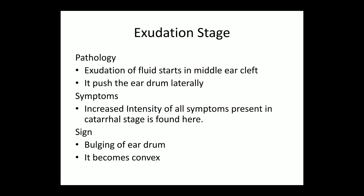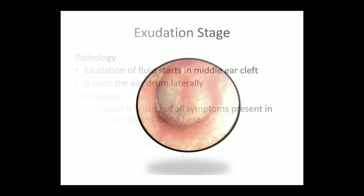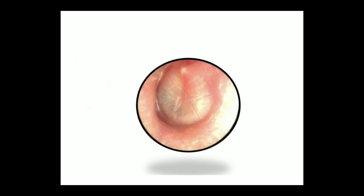The second stage is the exudation stage. Pathology: exudation of fluid starts in the middle ear cleft and pushes the eardrum laterally. Symptoms: there is increased intensity of all symptoms that were present in the catarrhal stage. Sign: bulging of the eardrum — it becomes convex. In this diagram we can clearly see the bulging of the eardrum and that it has outwardly become convex.